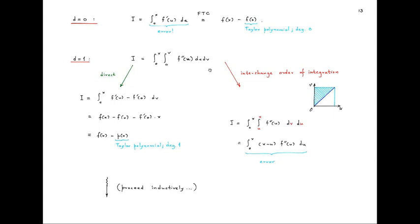Now let us see whether changing the order of integration gives the error term. We first have the integral with respect to u and then with respect to v, and for each fixed v we go from 0 up to v. If we interchange the order of integration, for each fixed u the variable v goes from u up to x. So this integral is also given by — interchanging the order — the inner integral from u to x of f''(u) dv, which gives the term x minus u. This is precisely the error term in the d=1 case.